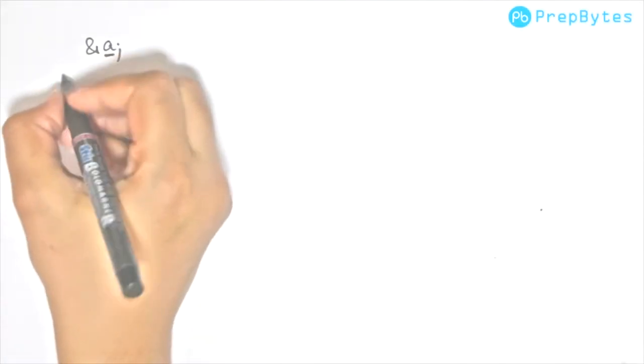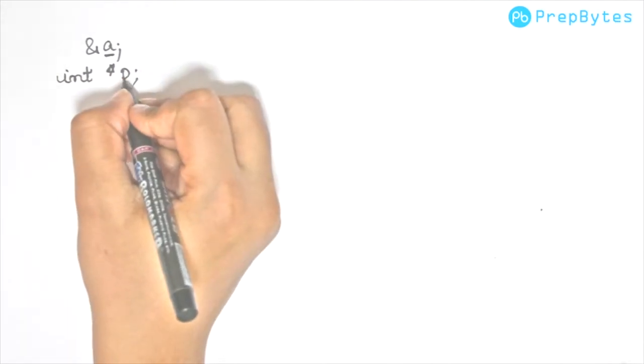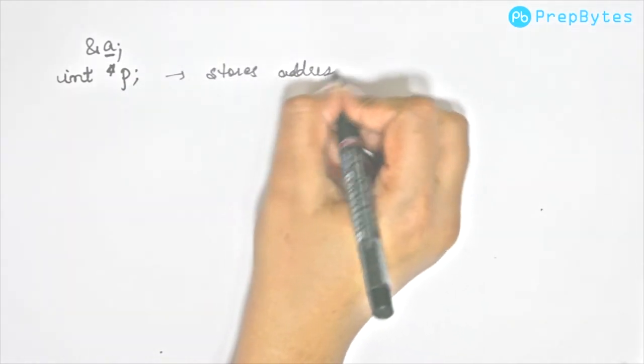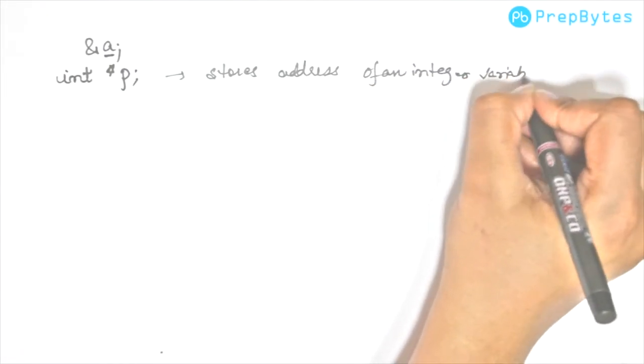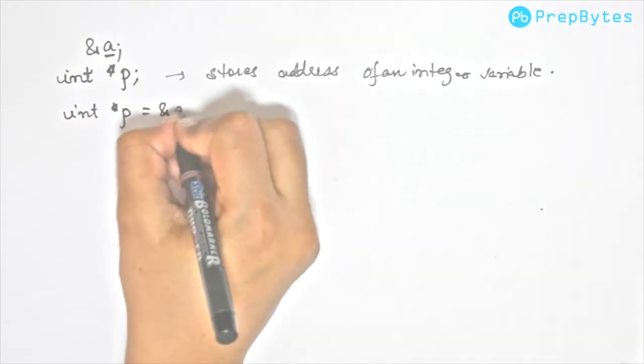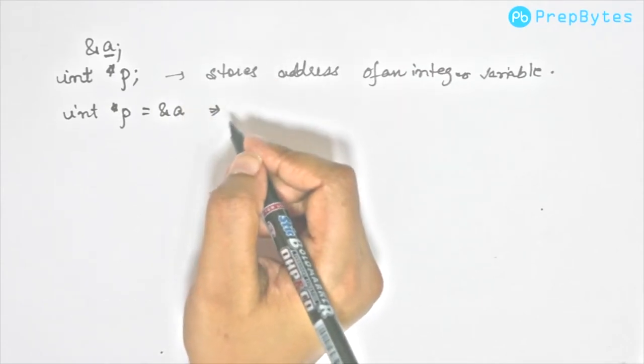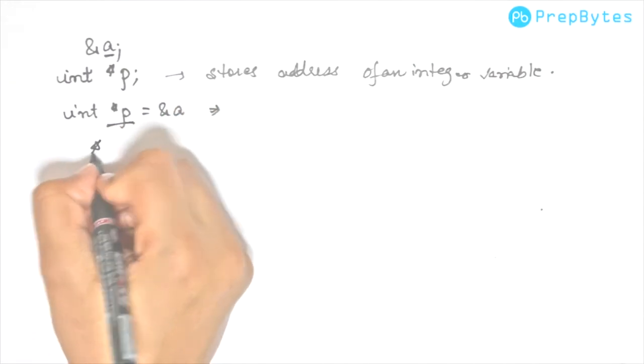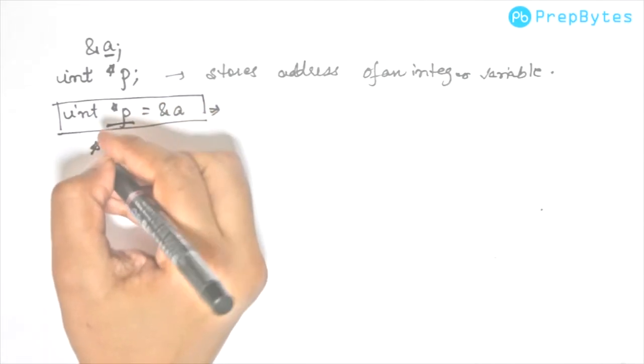Let's just quickly revise this stuff. First of all, we get address of any variable using ampersand and name of the variable. Next, we declare a pointer variable using star. So this p is a pointer to an integer which means it stores address of an integer variable. Next, we can simply store address to a pointer using this assignment. Now, if you want to access the value that is stored in this pointer, we can access it using star p. This star is also used to declare the pointer, and this star is used to access the pointer.